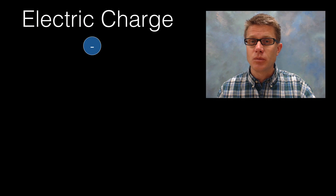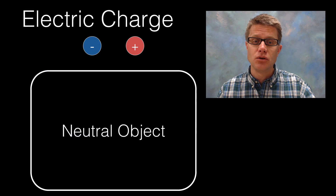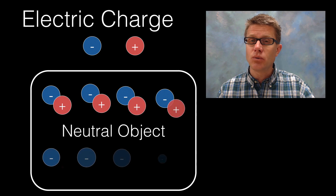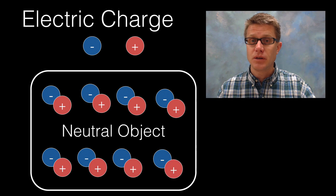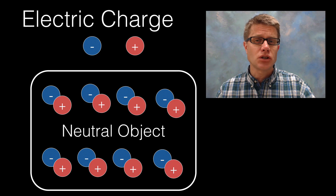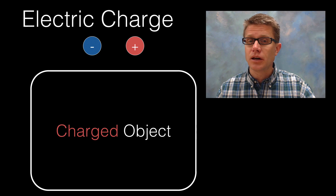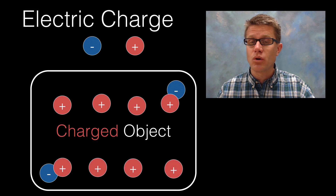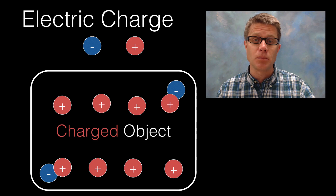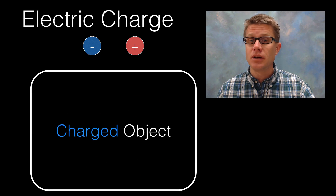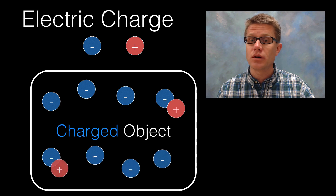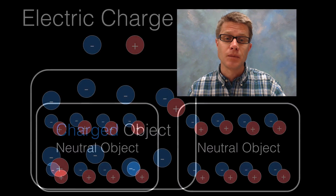An electric charge can either be positive or negative. If we are looking at a neutral object, it's going to have an equal amount of each of those charges. If we take a charged object, like that balloon, it's going to have more of a positive charge if it is positively charged, or more of the negative charges if it is negatively charged.